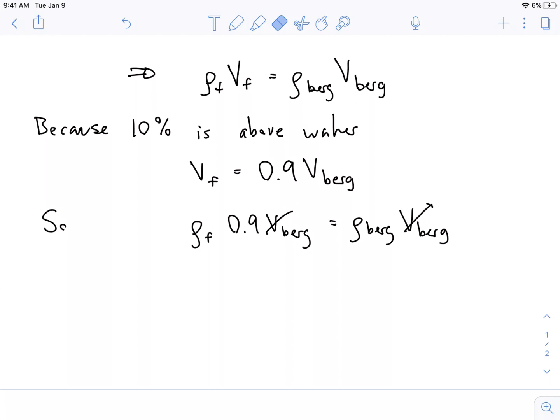Do that. And this implies that the density of the iceberg is equal to 0.9 times the density of the fluid.